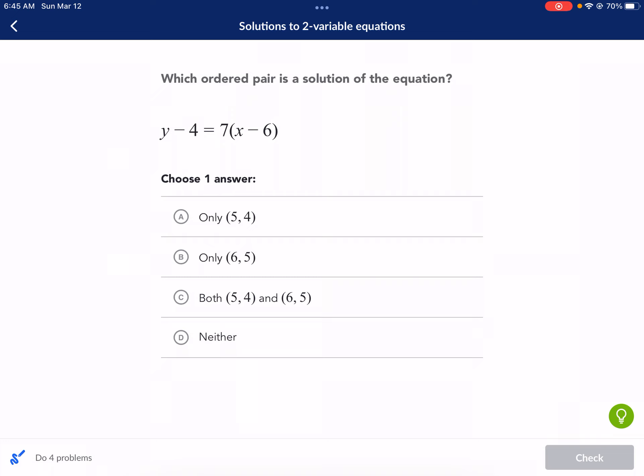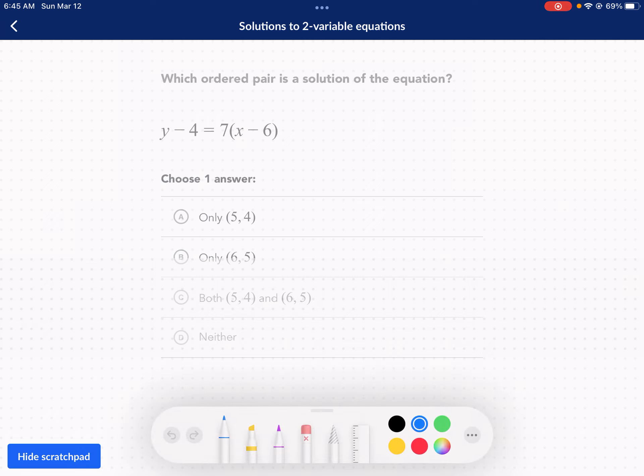So for this Khan Academy, what we're doing here, we're just testing points for X and Y, and we're seeing if it makes a solution. So let's go ahead and get right into it. Which ordered pair is a solution of the equation? This is an equation written in point and slope form, in case you're wondering. And essentially what we're going to do here is we're going to test different points.